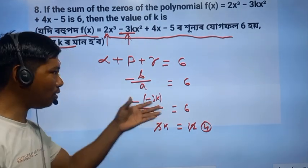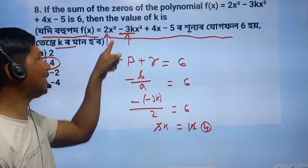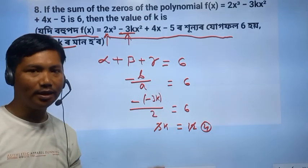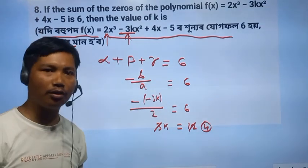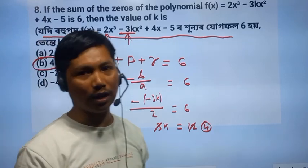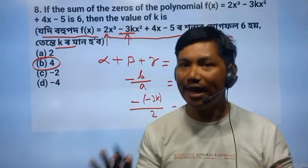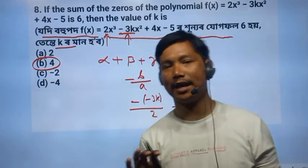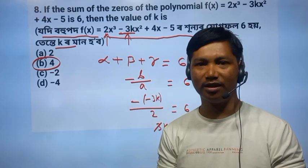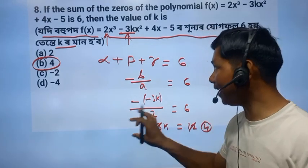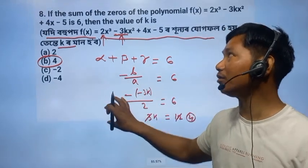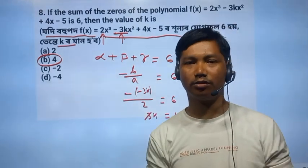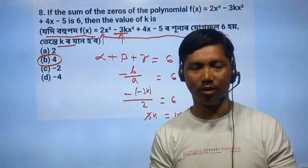The concept here is about alpha, beta, gamma — the relation between alpha and beta in the context of a cubic polynomial. If you understand this concept, the rest becomes easy. Comment and let us know.